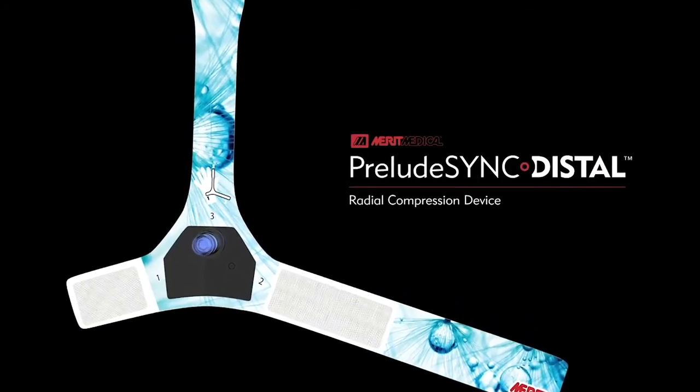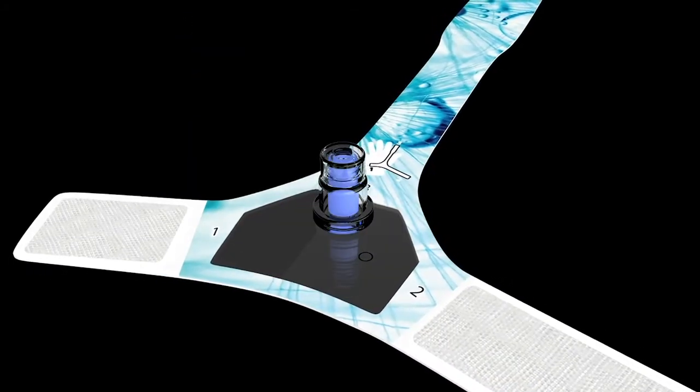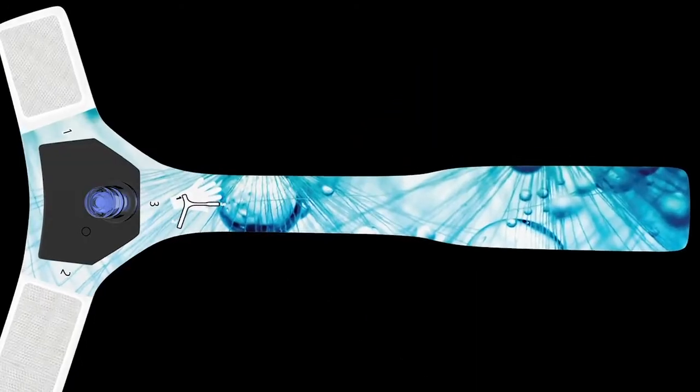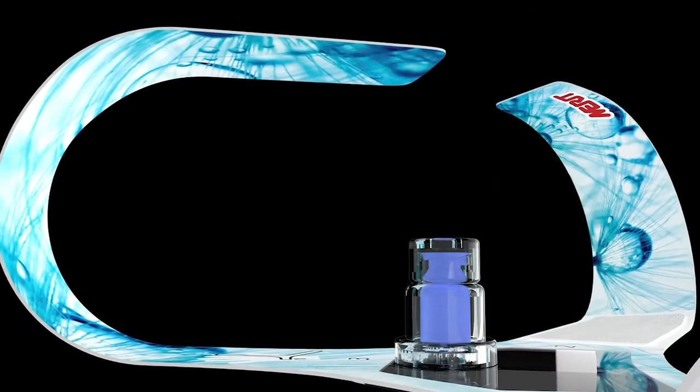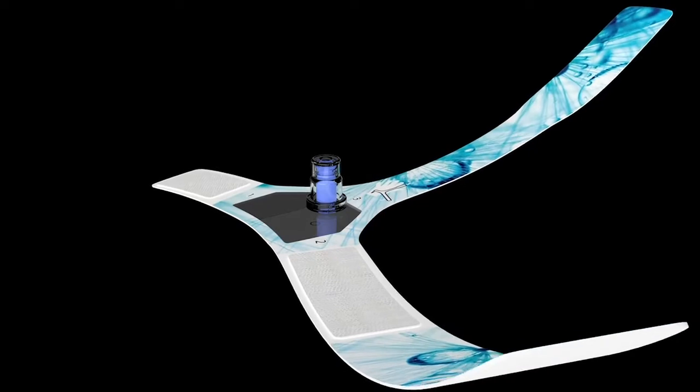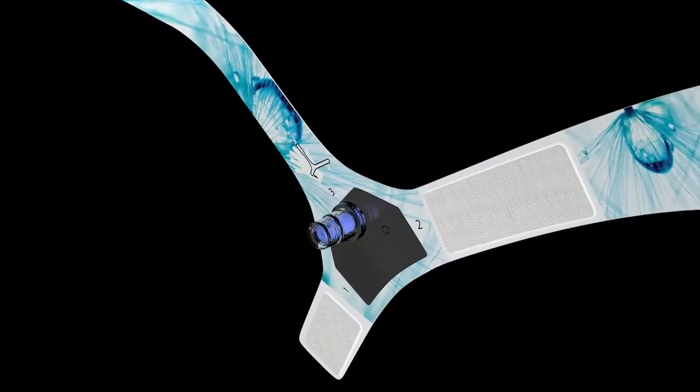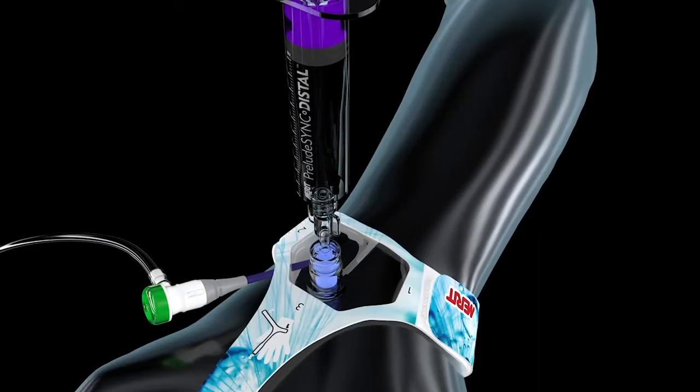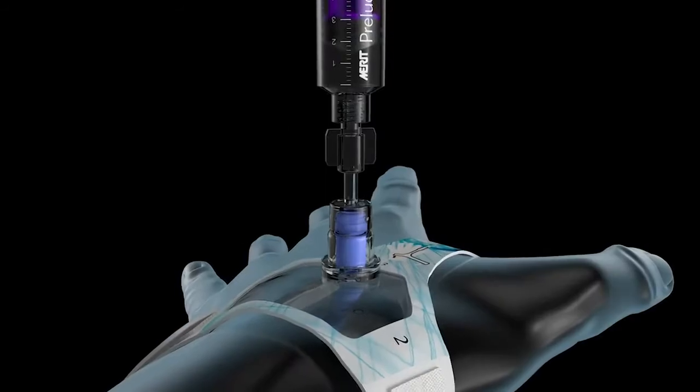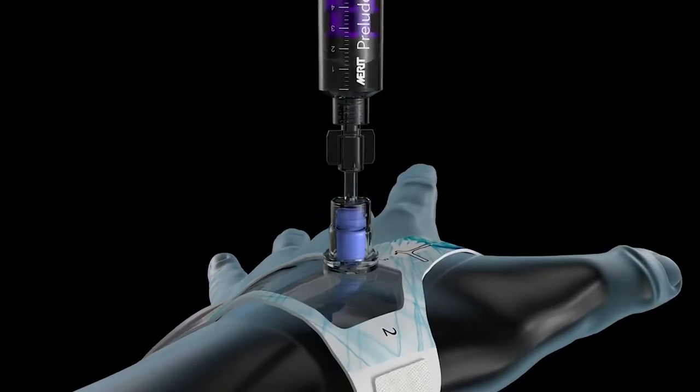The Prelude Sync Distal Radial Compression Device is used to gain and maintain hemostasis of the distal radial artery. It has a soft wristband and thumb saddle strap with secure hook and loop fasteners. The band delivers adjustable compression of the puncture site with an inflatable balloon and a check valve for easy inflation and deflation with a syringe.